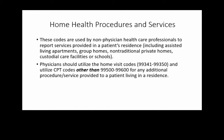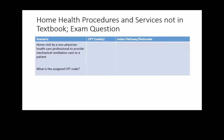Home health procedures and services codes are used by non-physician health care professionals to report services provided at a patient's residence, including the patient's home, assisted living, group homes, non-traditional private homes, custodial care, or school. Physicians use home visit codes from the E&M chapter instead. Example: a home visit by a non-physician professional to provide mechanical ventilation care — main term is home services, subterm mechanical ventilation, code 99504.